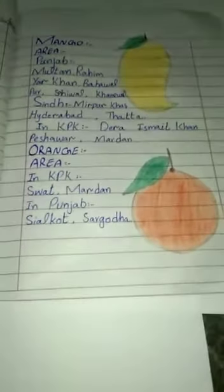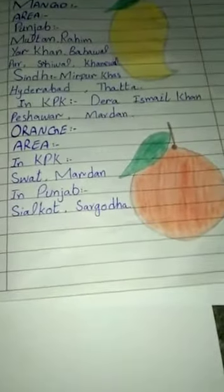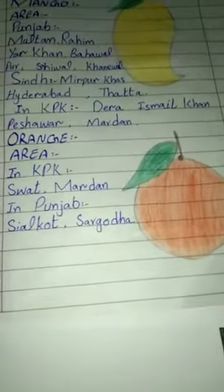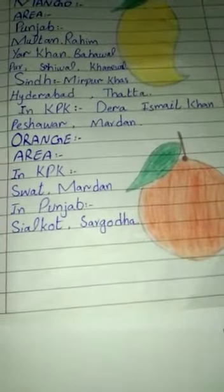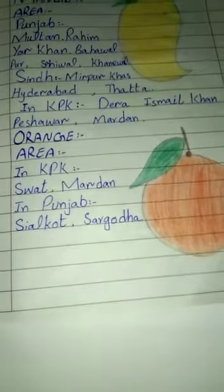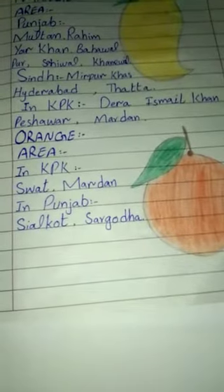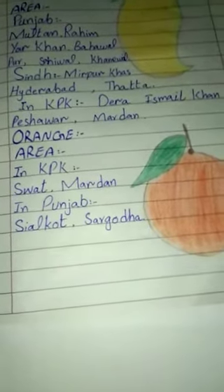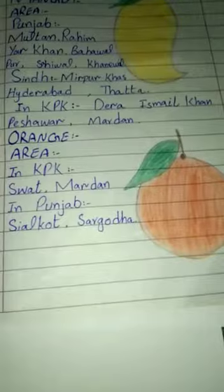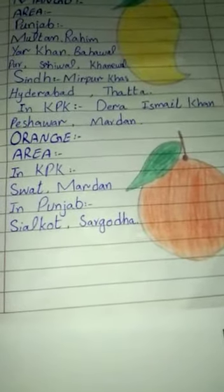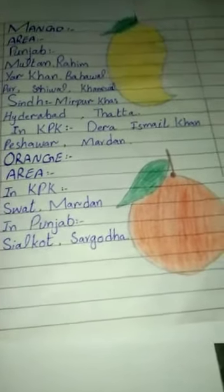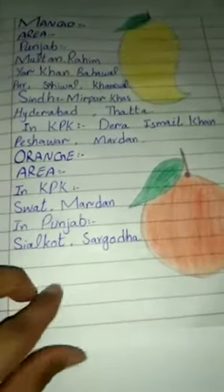Food number two is orange. Orange is grown in KPK. Orange is a big part of this country's fruit production.